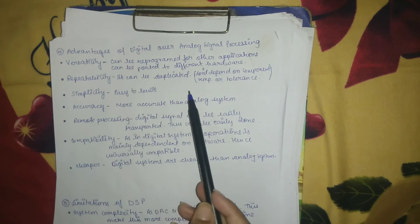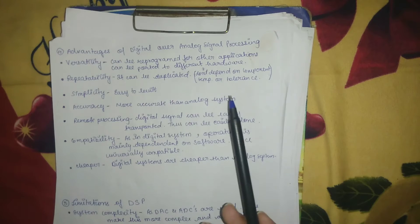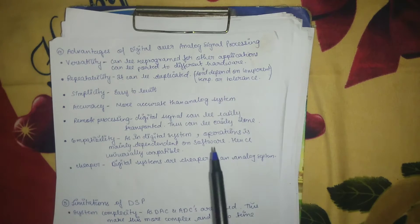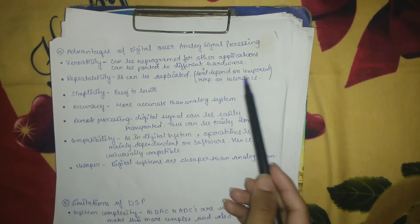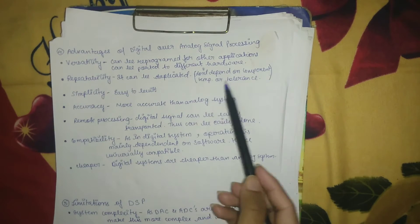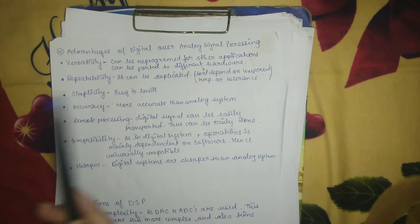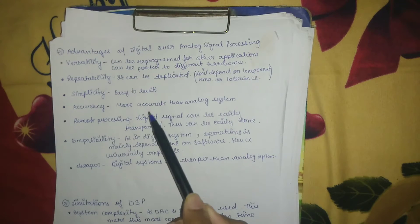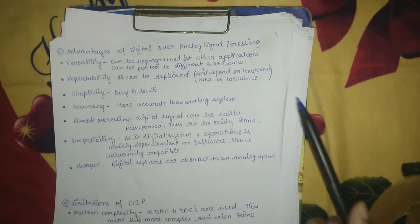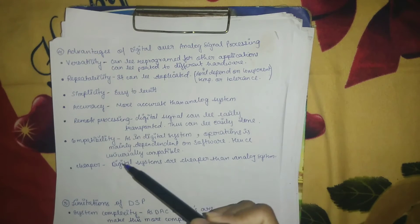Next is repeatability — digital signals can be duplicated or reused. They also don't depend on component temperature or tolerance. Next is simplicity: digital signals are easier to build than analog ones.